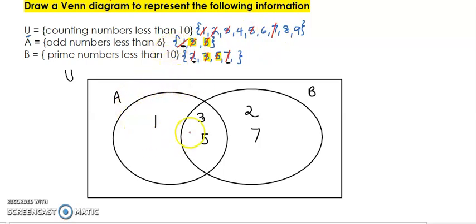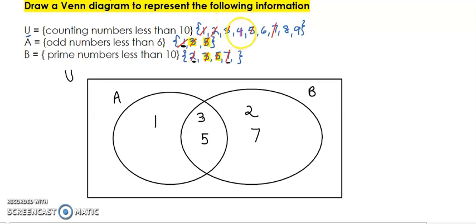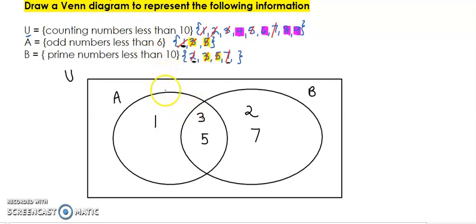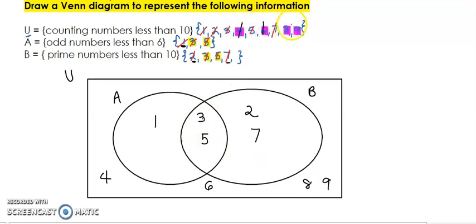We have now completely put all the members for Set A and all the members for Set B. Now we have to look at the universal set — are there any members we have not put in? There is 4, 6, 8, and 9. We have to remember they are not in Set A and not in Set B, so we put them on the outside — inside the rectangle but outside of the ovals. So we put 4, 6, 8, and 9 there and cross them off.